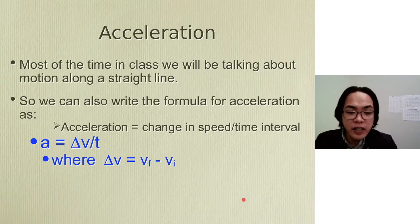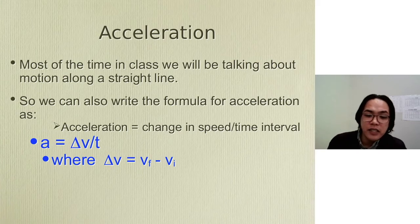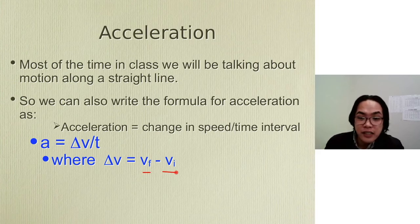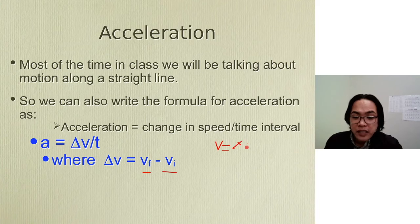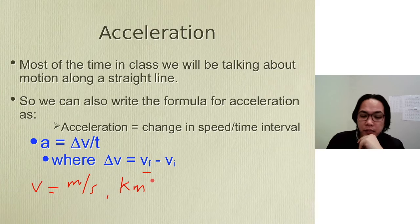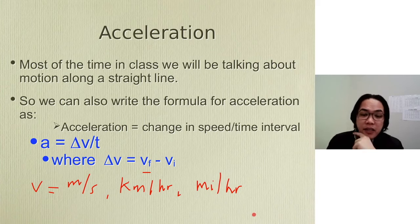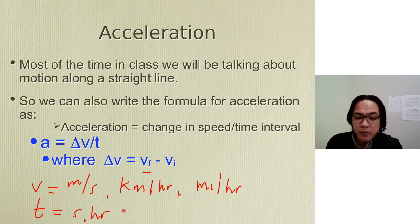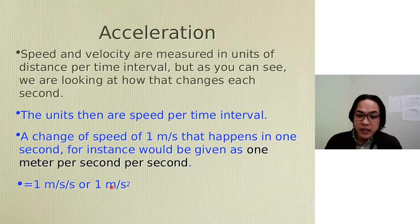Most of the time in class, we will be talking about motion along a straight line. So we can also write the formula for acceleration as change in speed divided by time interval. Change in velocity, or delta V, can also be written as final velocity minus initial velocity. I want you to familiarize the units: for velocity, we always use the unit meters per second, also kilometers per hour, and miles per hour. It's a combination of distance and time — your time of course is seconds or hours. The unit for acceleration comes from speed and velocity with regards to time.